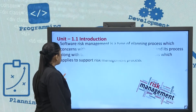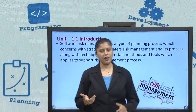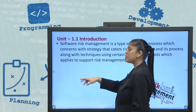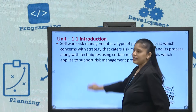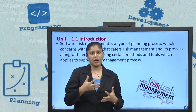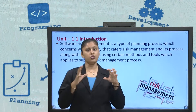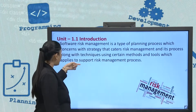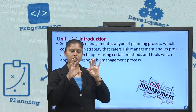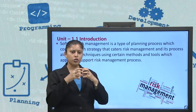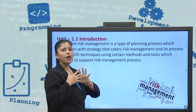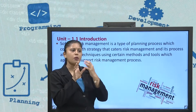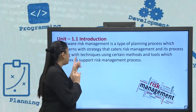Software Risk Management is a type of planning process. When we come across the term management, it has planning involved in it. It is a type of planning process which concerns with strategy that caters to risk management and its process along with techniques. Whatever risk comes across in my product development, the risk management and the techniques I am going to use in order to minimize that risk — the catering between both using certain methods and tools which apply to support the risk management process — is nothing but my software risk management, which will plan out what risks are coming and what tools and techniques to use to avoid, minimize, or sort out those risks.